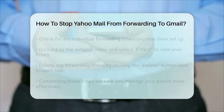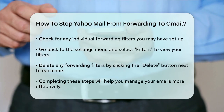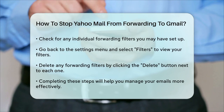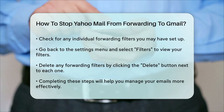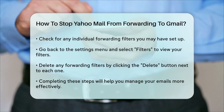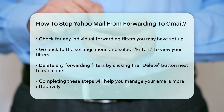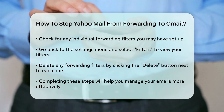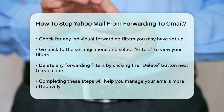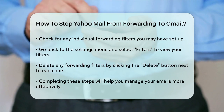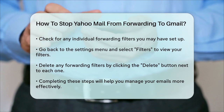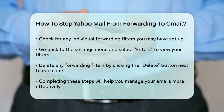If you have set up individual forwarding filters, you might need to delete those as well. To do this, go back to the settings menu and select Filters on the left side. Here, you can see all the filters you've created, including any forwarding filters. Click the Delete button next to each forwarding filter you want to remove. By following these steps, you'll successfully stop Yahoo Mail from forwarding emails to your Gmail account. This will help you manage your emails more efficiently and avoid any unnecessary clutter in your inbox.